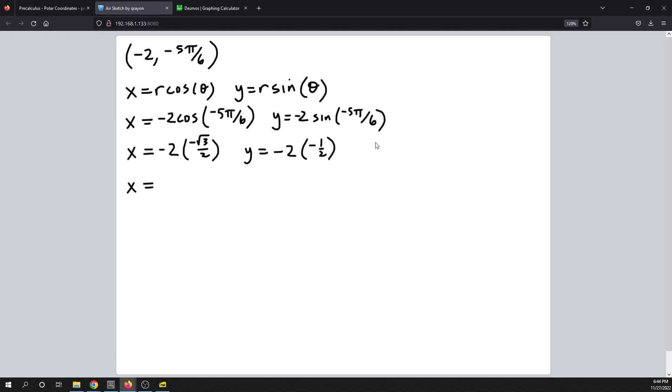So for x, we have negative 2 divided by 2 would be negative 1. Negative 1 times negative square root 3 is going to be positive square root 3. And then for y, we have negative 2 times negative 1 half. That's going to be a positive 1.